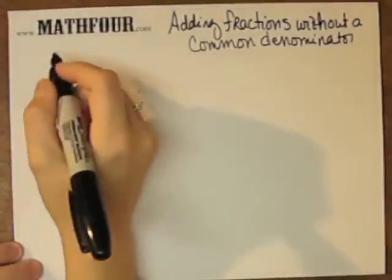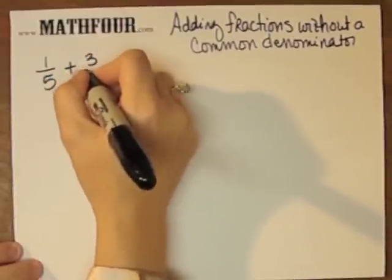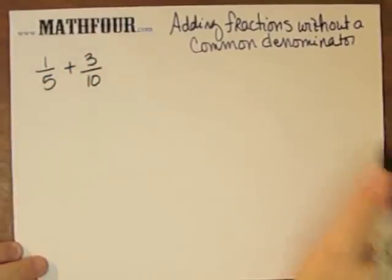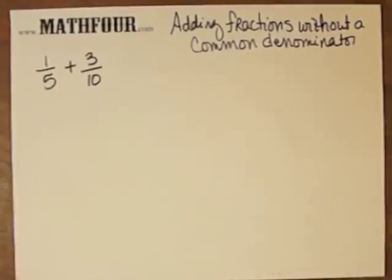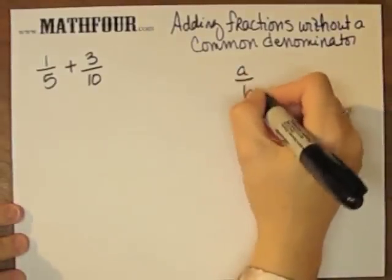We're adding fractions without using a common denominator, and I'm going to use the example 1/5 and 3/10ths, which has a very clear common denominator, and I'm going to use the method...